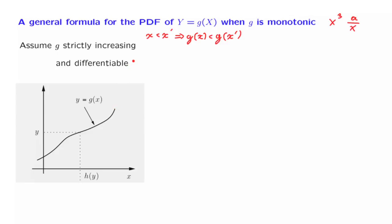Because of the assumptions we have made on g, we have an interesting situation. Given a value of x, a corresponding value of y will be determined according to the function g. But we can also go the other way: if I tell you a value of y, then you can specify one and only one value of x that gives rise to this particular y. The function g takes us from x's to y's, but you can also go back from y's to x's. This mapping is the inverse of g, which we call h. So h(y) is the value of x that produces a specific value y.